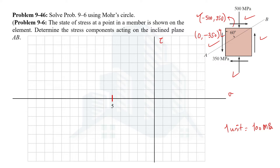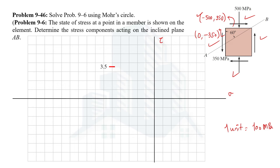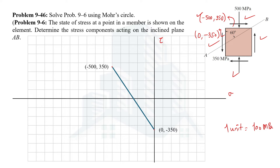Moving 3.5 units upward gives us the first point for this face. For the second face, we have zero normal stress — so we start at the origin — but shear stress of negative 350, meaning we move 3.5 units downward. That gives us the second point. Joining these two points gives us the diameter of the Mohr circle, and from that we can draw the full Mohr circle.